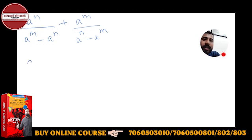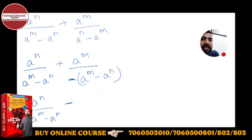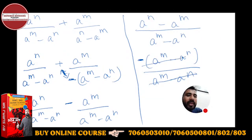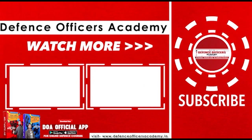See here — write it as a^n upon (a^m − a^n). Now I am taking the minus sign common in the denominator of the second term. So it becomes (a^m − a^n). The minus sign and plus sign together make it minus. So this becomes: a^n upon (a^m − a^n) minus a^m upon (a^m − a^n). Now the base is the same, so the numerator and denominator cancel. The answer will be minus 1, not 1 — the answer is minus 1.